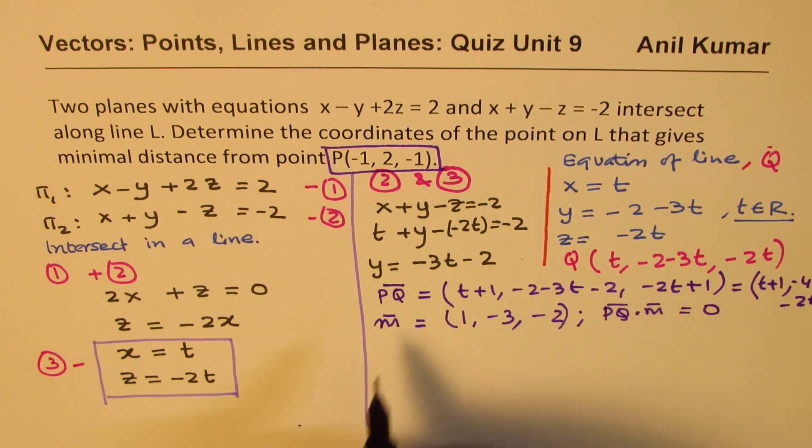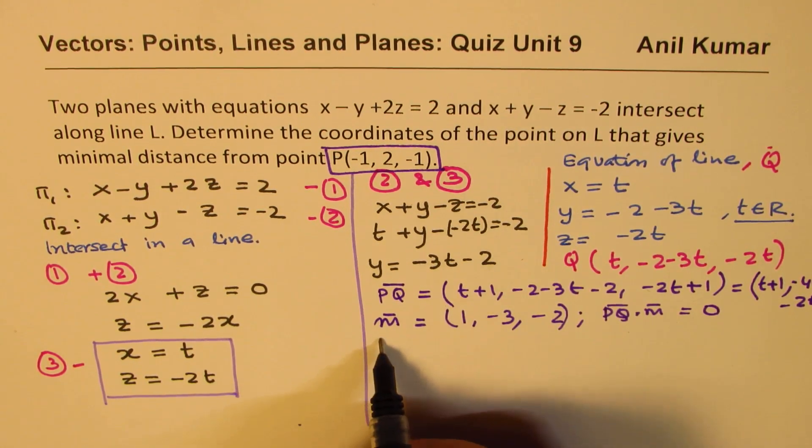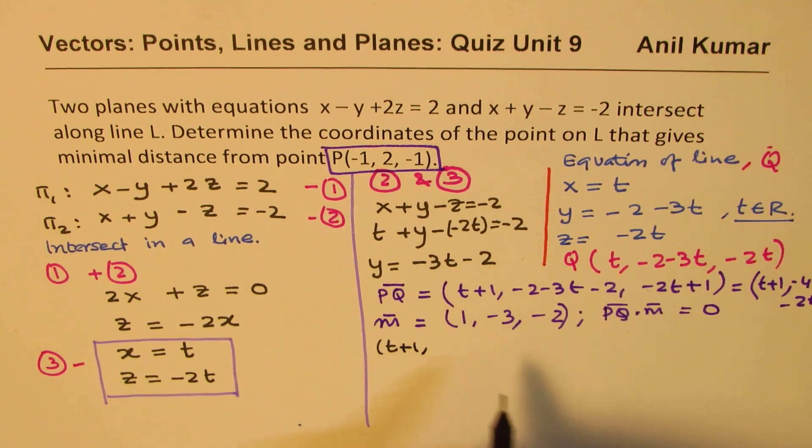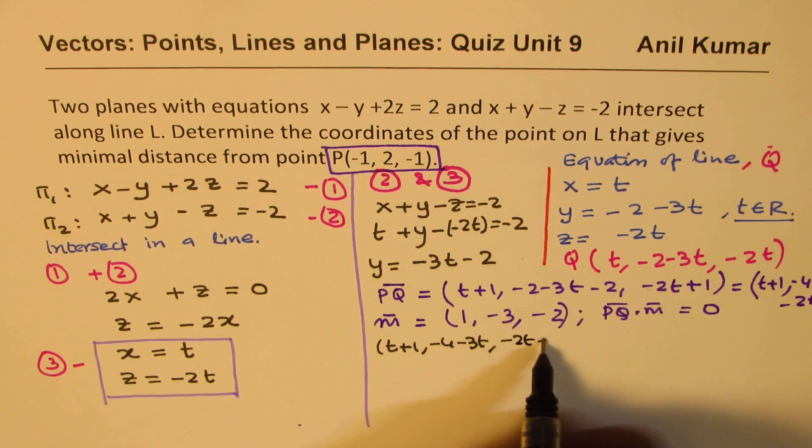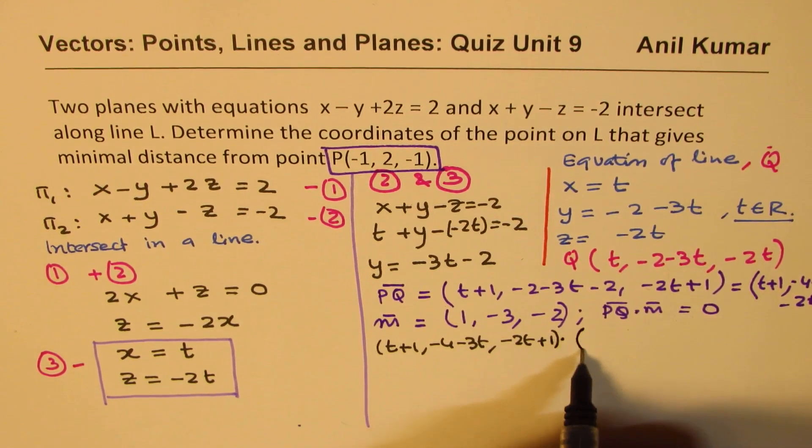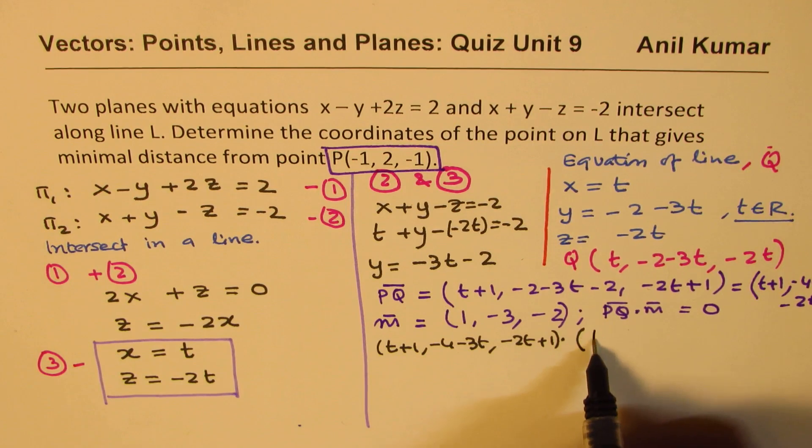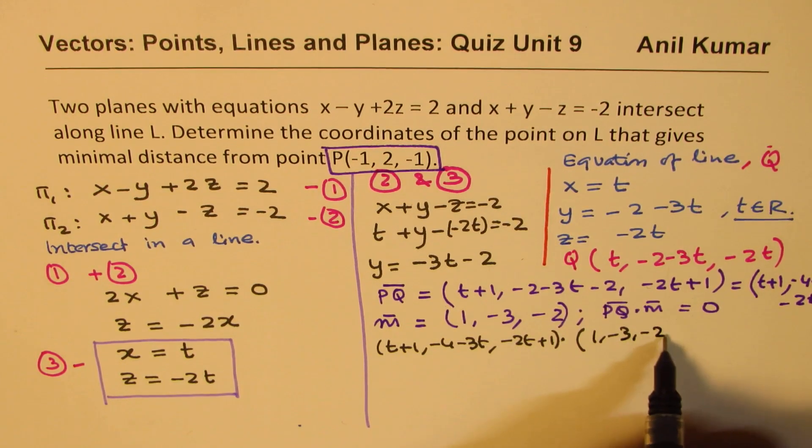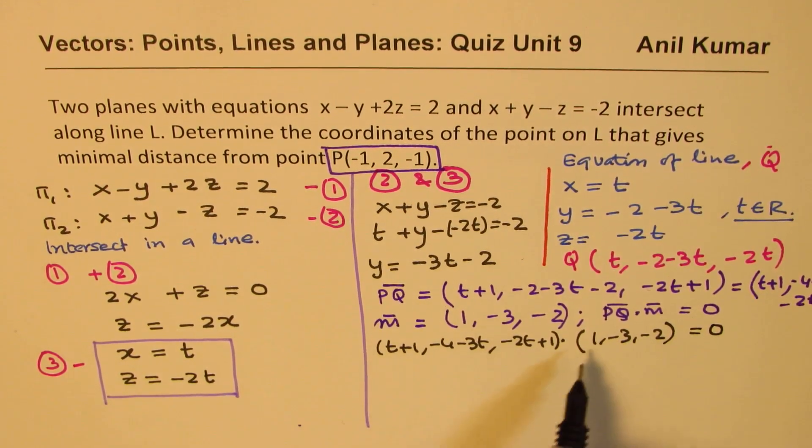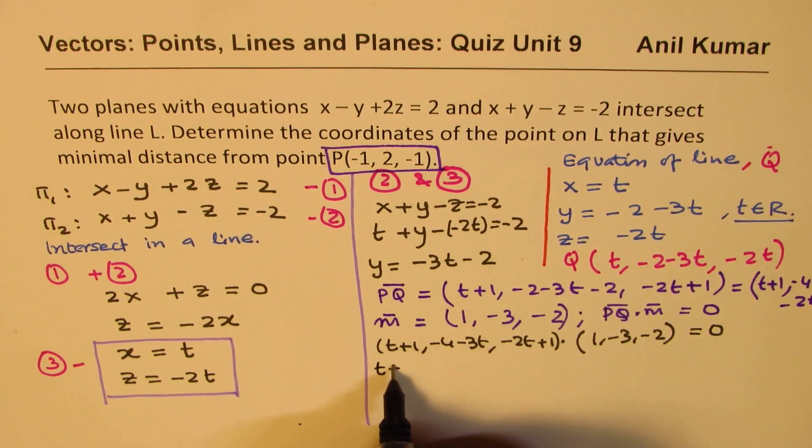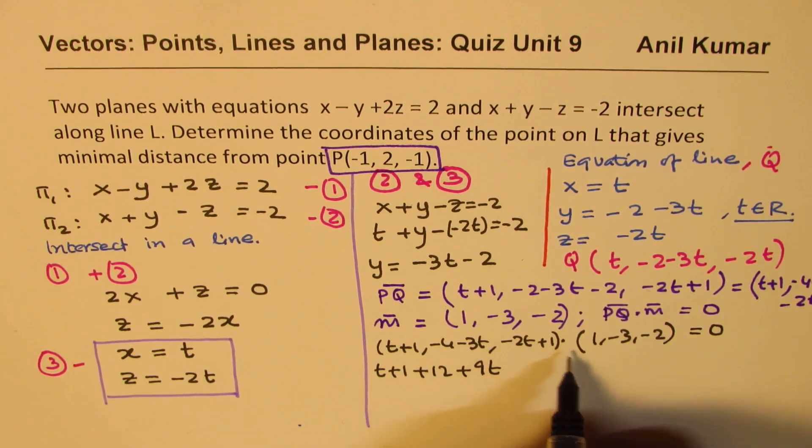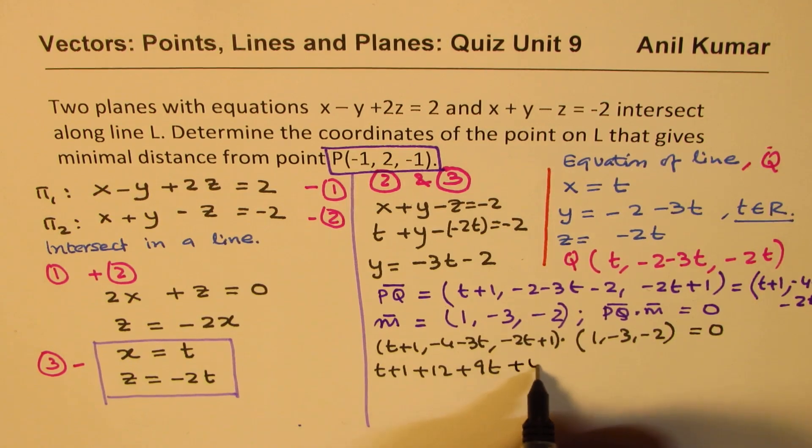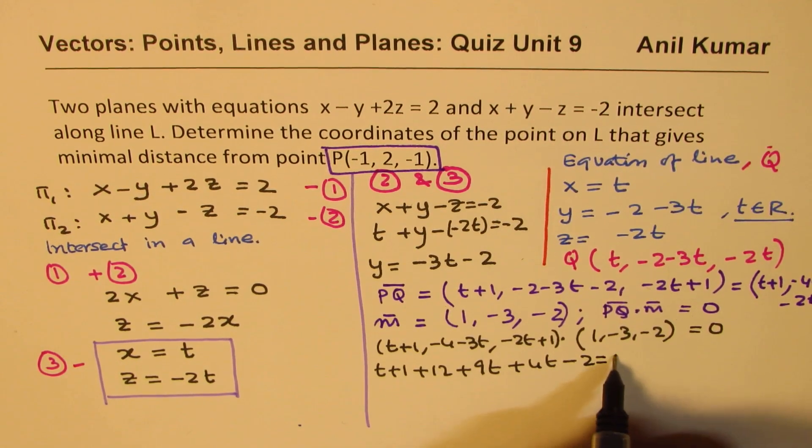So PQ, which is (t plus 1, minus 4 minus 3t, minus 2t plus 1) dot this direction (1, -3, -2) should equal 0. Let's multiply: t plus 1, minus 3 times this gives plus 12 plus 9t, minus 2 times this gives plus 4t, and minus 2 equals 0.